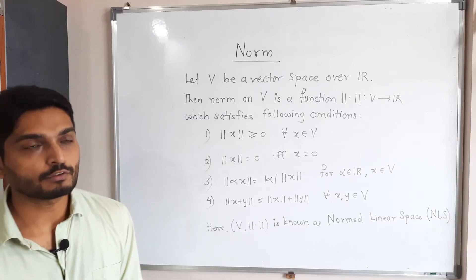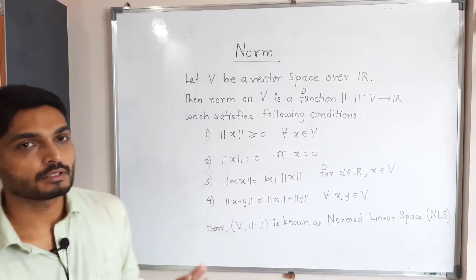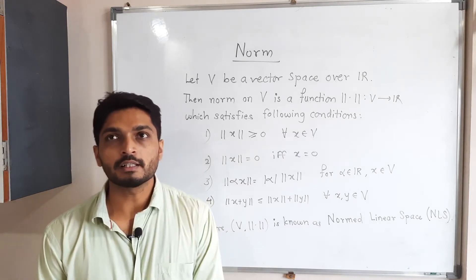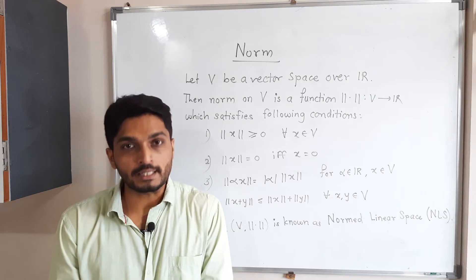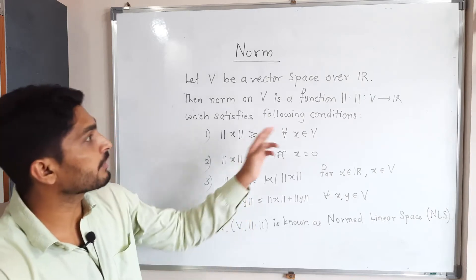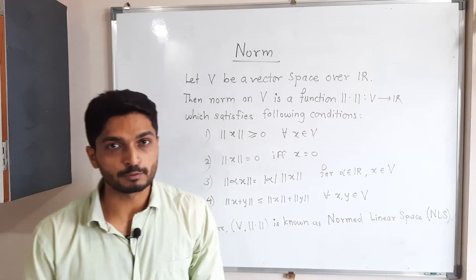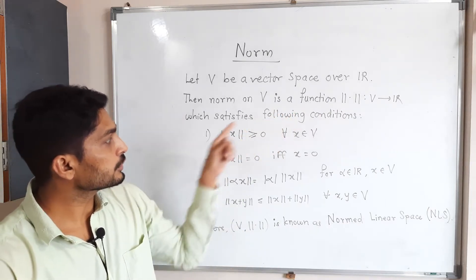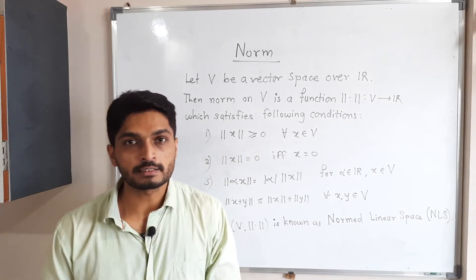Let us discuss the definition of norm. You are already familiar with a vector space from algebra. We need to have some vector space. Norm is a function which is defined on V, and it gives a real number. That function should satisfy four conditions; then we can declare it as a norm.